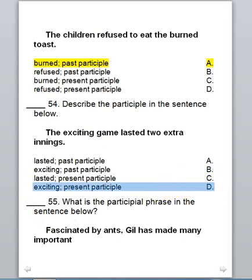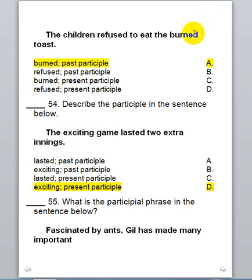We will choose D. A participle usually acts like an adjective — it describes something. So 'exciting' describes 'the game,' and 'burned' describes 'the toast.' So it's kind of like an adjective.